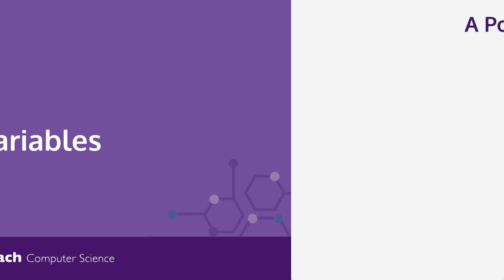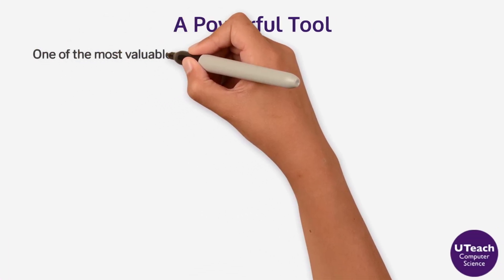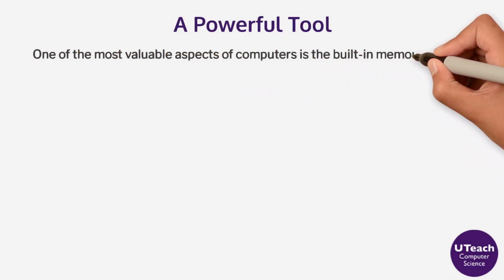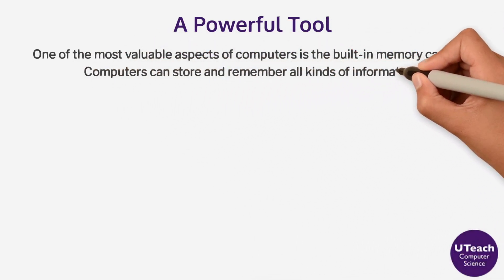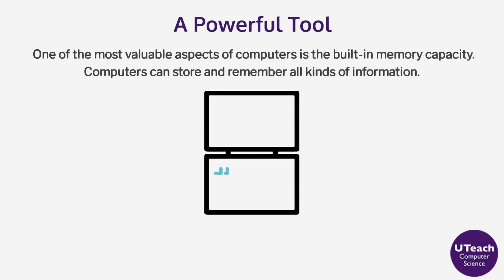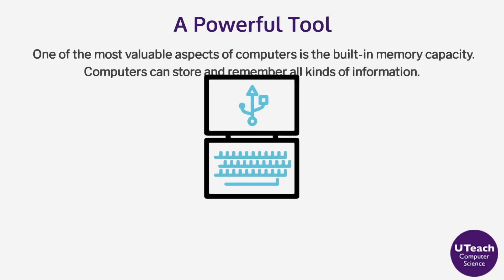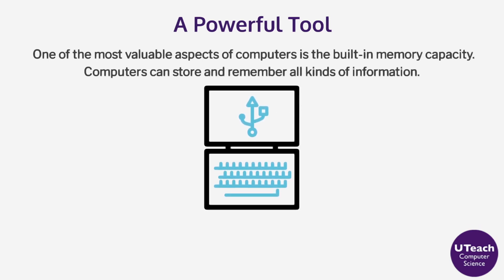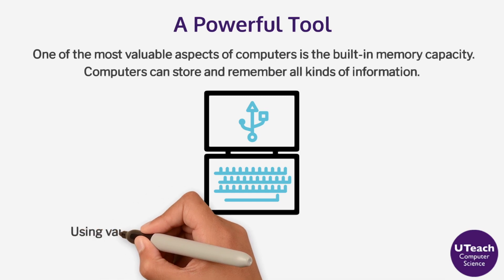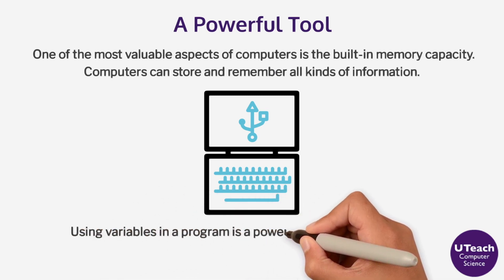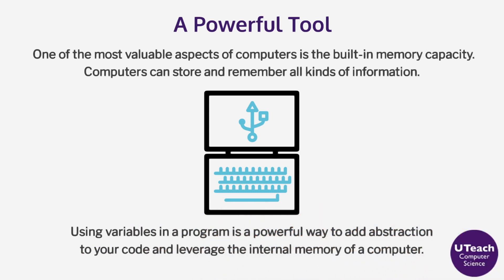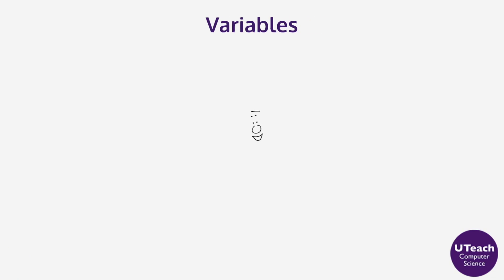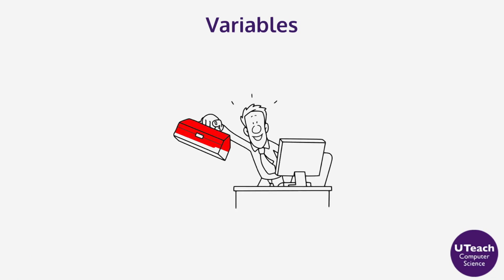Variables. One of the most valuable aspects of computers is the built-in memory capacity. Computers can store and remember all kinds of information. As a programmer, learning how to utilize a computer's memory can enhance programs and applications to make them much more efficient and functional. Using variables in a program is a powerful way to add abstraction to your code and leverage the internal memory of a computer. Variables are one of the central concepts in computer science and one of the most important tools in a programmer's toolbox.